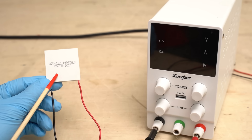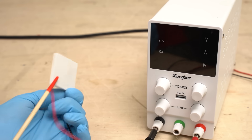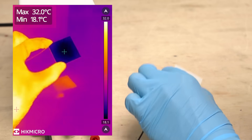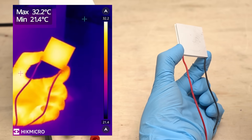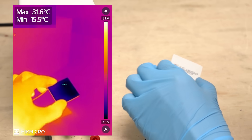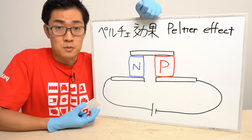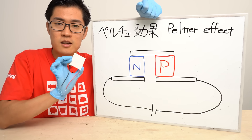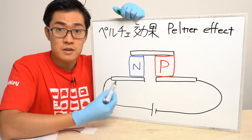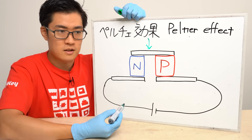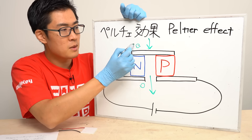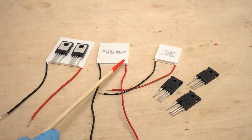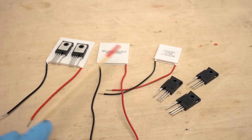A Peltier device has an interesting characteristic. When an electric current is passed through it, one side cools down and the other side generates heat. This side is getting cold and the other side is getting hot — it feels quite cool to the touch, around 16 degrees Celsius. This is due to the Peltier effect. A Peltier device contains P-type and N-type semiconductors connected with metal. The metal on one side is deprived of heat — the endothermic effect — and the heat escapes to the metal on the other side. This characteristic is used for portable refrigerators and semiconductor cooling.